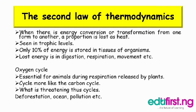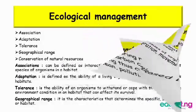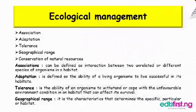So, ecological management includes: one, association; two, adaptation; three, tolerance; four, geographical range; and the last one is conservation of natural resources.